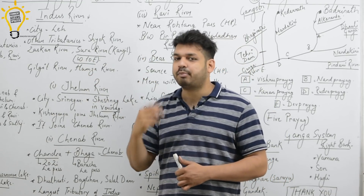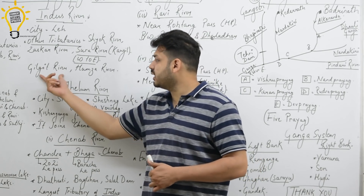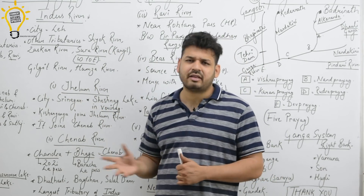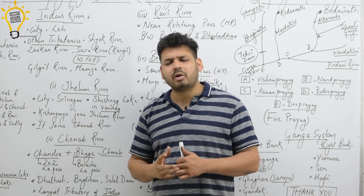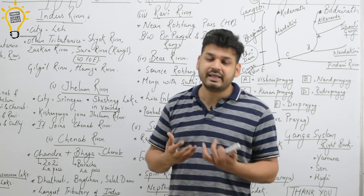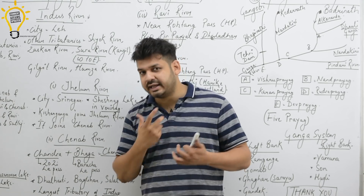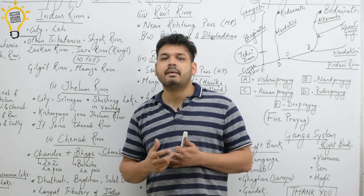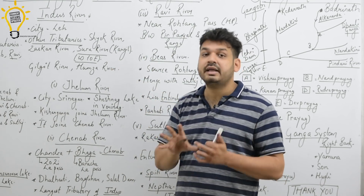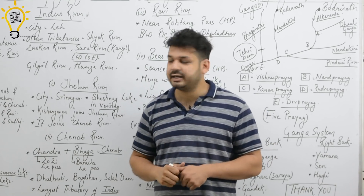Some of these minor tributaries like Gilgit and Hunza may appear in exams. These are tributaries of the Indus River. While they are not the most critical for exams, it is good to remember that they are tributaries of the Indus River System.